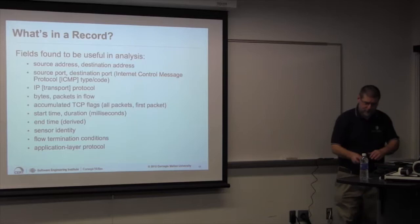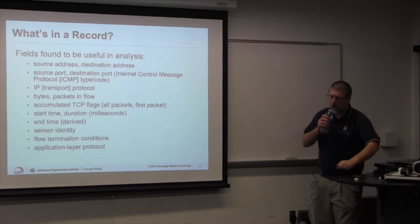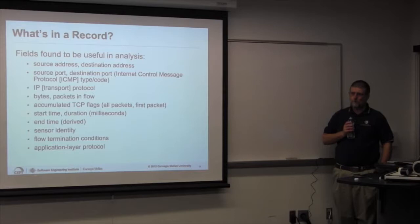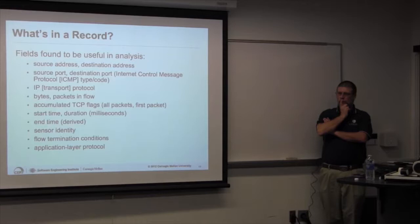One thing I often hear: people misinterpret having single-direction flows as a shortcoming of silk. I think that's a common misconception. In network security monitoring from a defensive perspective, analysis is actually aided by having those flows separated. Having them separated means less abstraction from the real data.